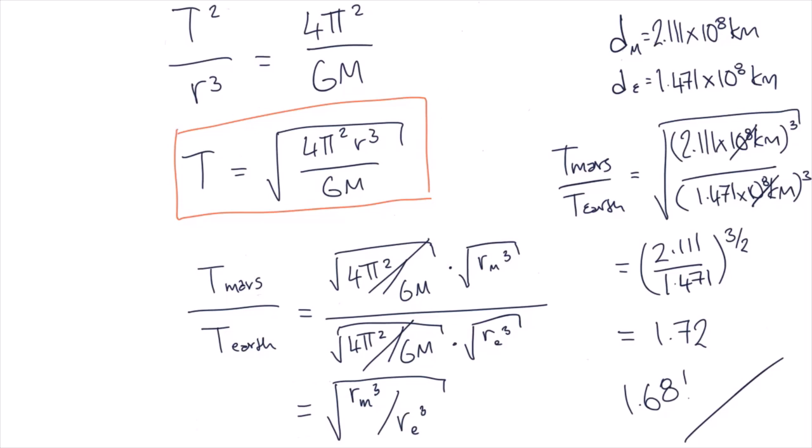But why isn't the ratio exactly the same as we calculated before? Well, before we just assumed that Mars's orbit was circular and used the experimentally measured value of the Earth's period. In the second calculation, we assumed that both the Earth and Mars have perfectly circular orbits. If we calculated the Earth's period assuming the orbit was circular, it would be a bit less than 365 days.